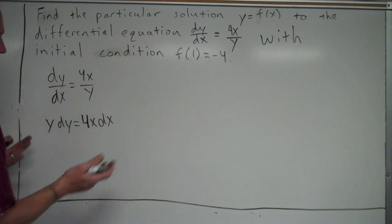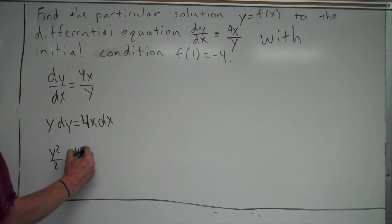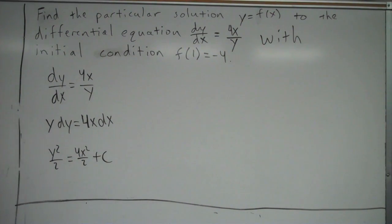So this would, on an AP test, if it was a free response, this would be one point for getting that. Now I need to take my antiderivative. The antiderivative on the left side here is just y squared over 2 is equal to 4x squared over 2 plus c. So you get a point for finding your antiderivatives, and you get a point for plus c. You need to make sure you put your plus c on that step when you take the antiderivatives.